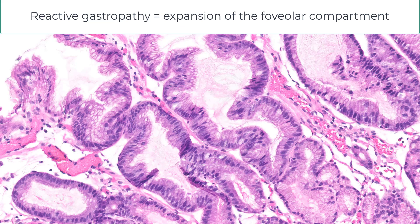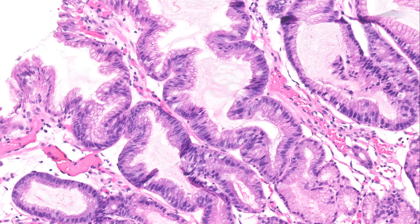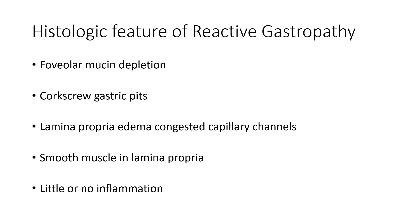The foveolar compartment expands so much that it collapses on itself, and that is how the serrated architecture is created. So the five features of reactive gastropathy are: loss of mucin, the serrated corkscrew appearance of the pits, lamina propria edema and congested capillary channels, smooth muscle proliferation (which was not present in this case), and by definition, very little or no inflammation.